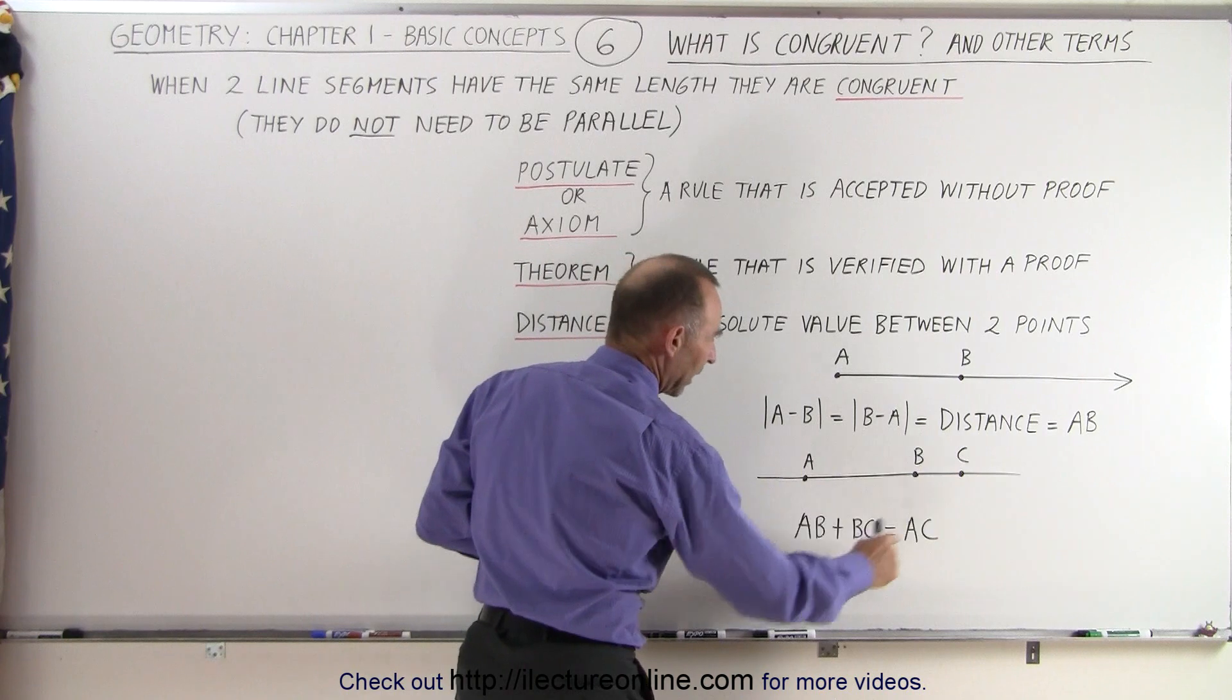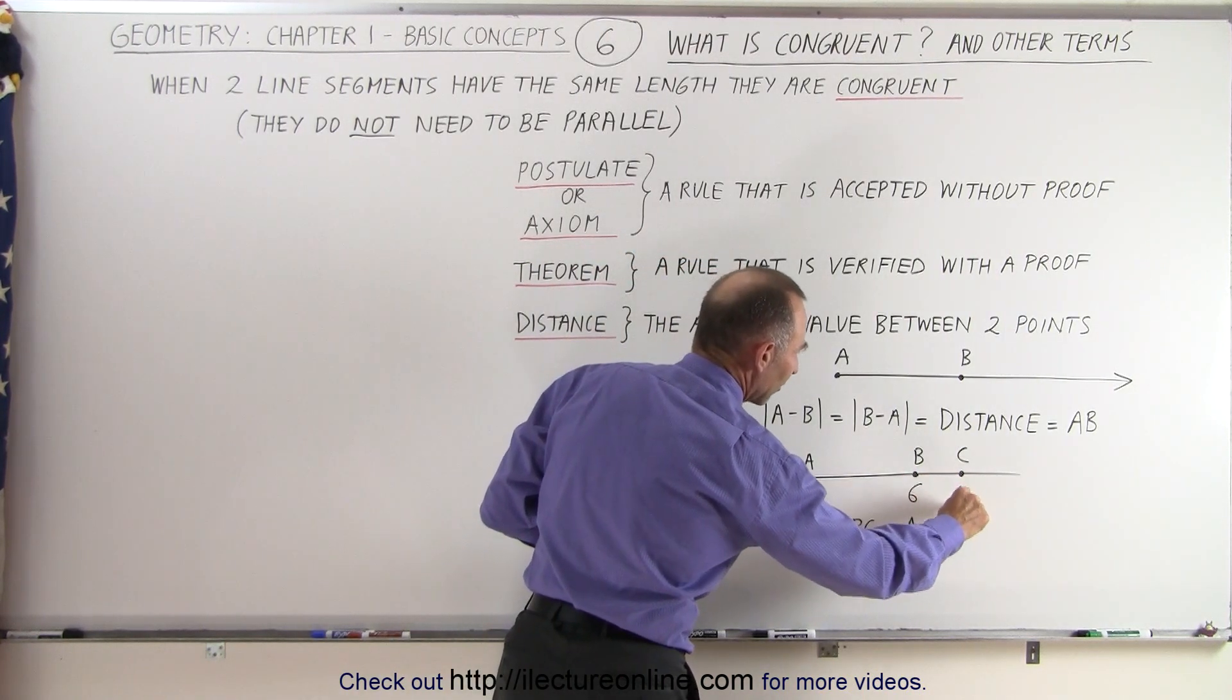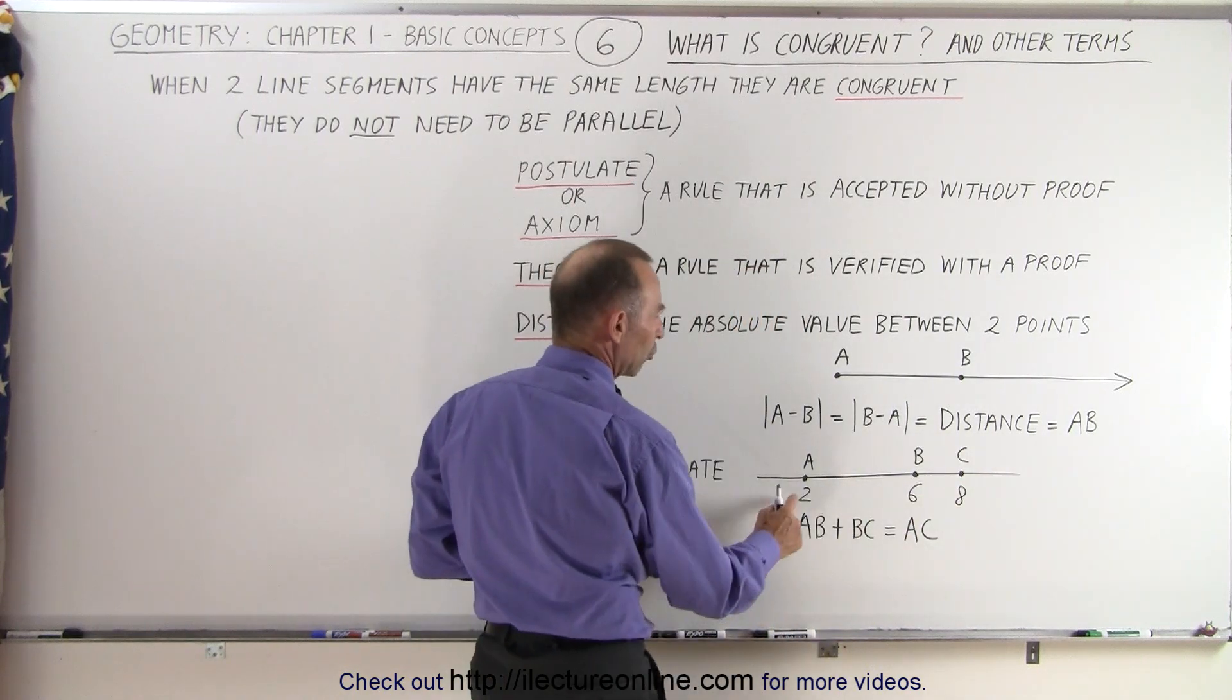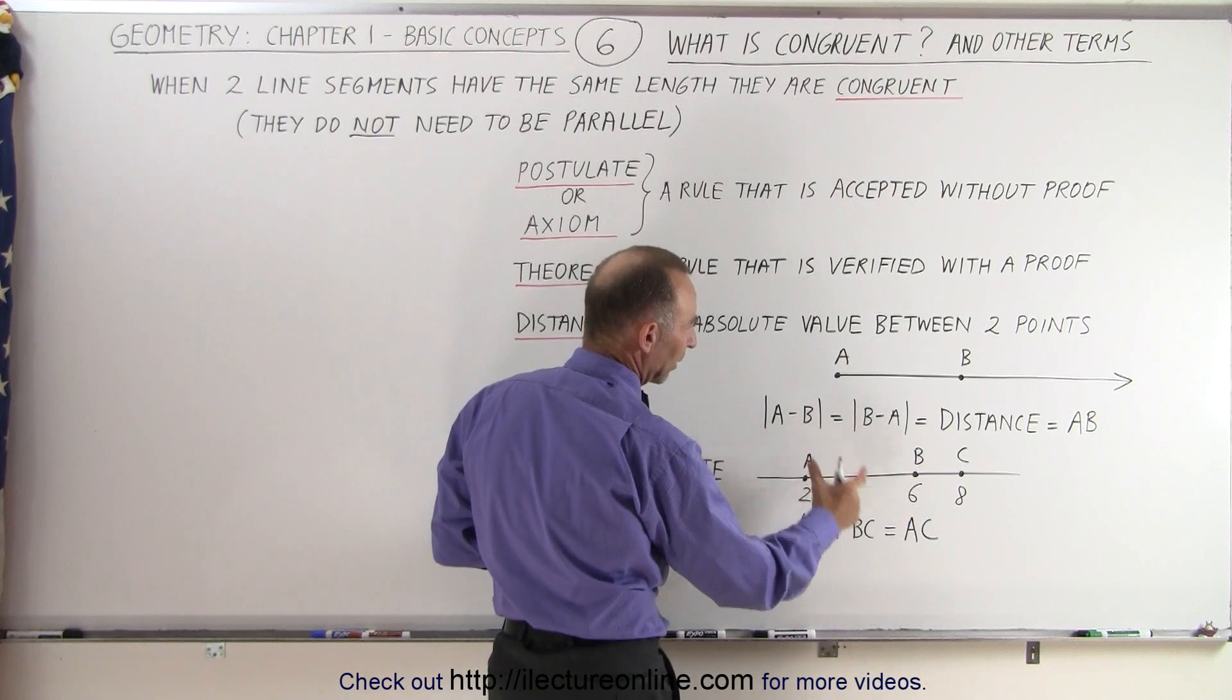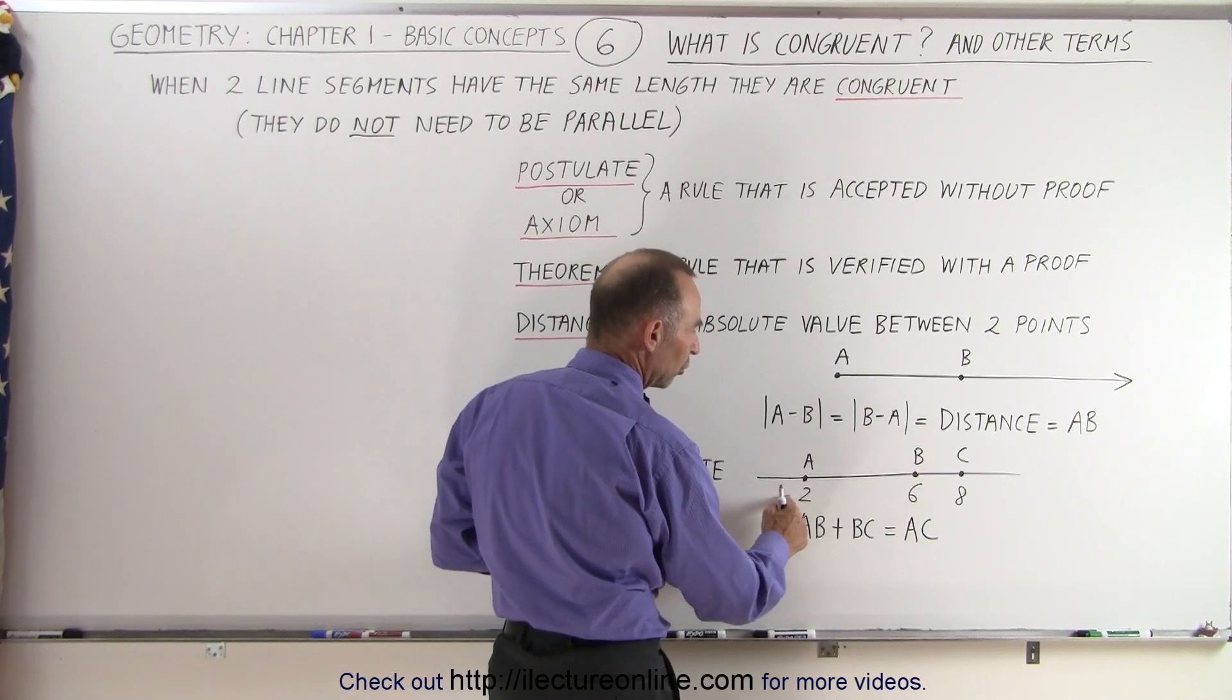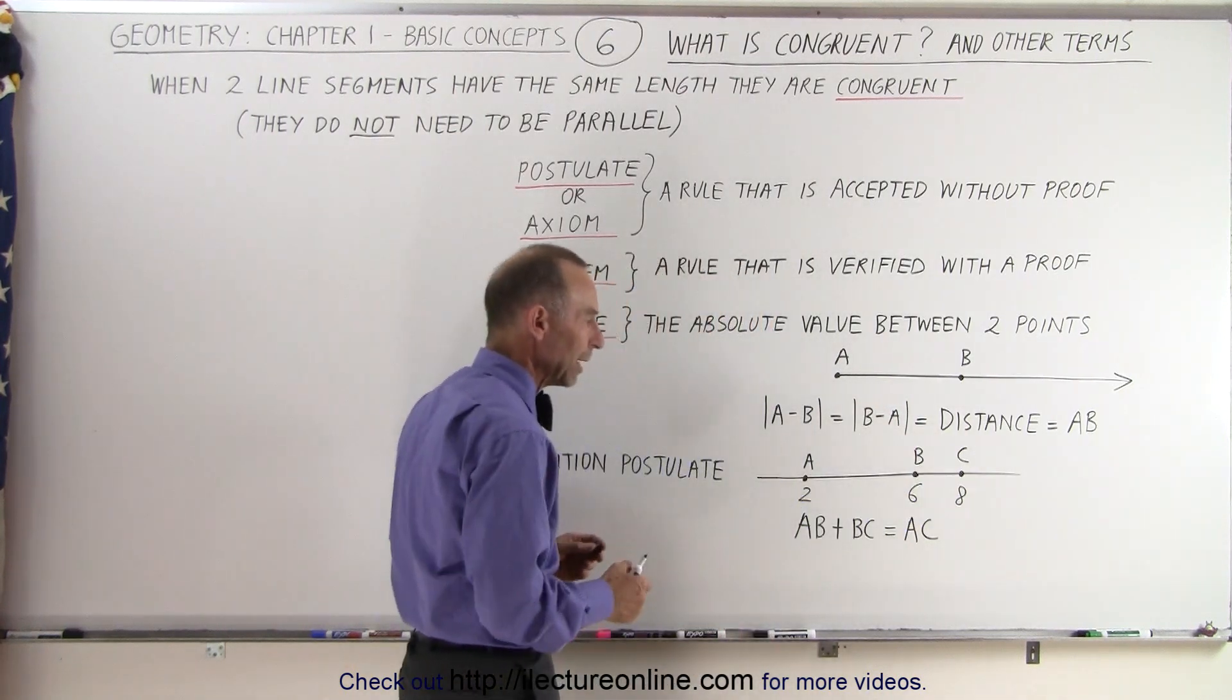If this was on the number line, and A was for example 2, and B was 6, and C was 8, then you can see that 2 minus 6 is minus 4. We take the absolute value, we get 4. 6 minus 2 is 4. We take the absolute value, we get 4. So 4 is simply the distance between A and B.